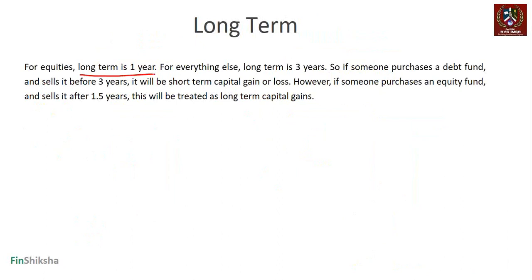To clarify the long-term definitions: for equities, long term is one year; for everything else — debt funds, land, gold — long term is three years. If someone purchases a debt fund or land and sells it before three years, it's short-term capital gain. If someone purchases equity and sells it after one and a half years, that's long-term capital gain with zero tax.